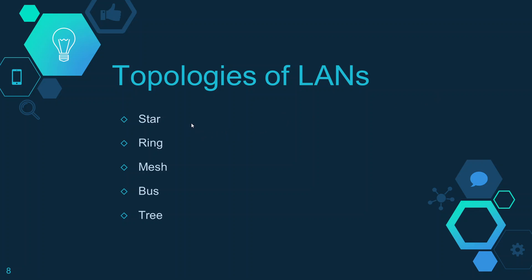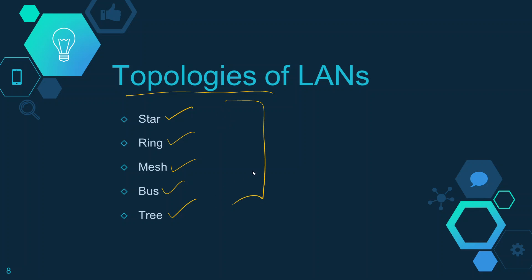Now, what are the different topologies of LAN? LAN has many topologies such as the star, ring, mesh, bus, and tree topology. The advantages and disadvantages of all these topologies will be covered in a separate video soon.